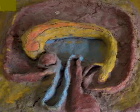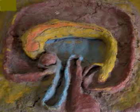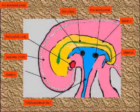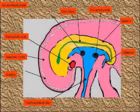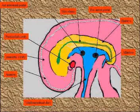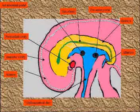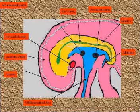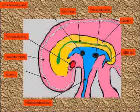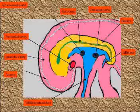During transverse folding, part of the secondary yolk sac is also incorporated into the embryo as the primitive midgut. And as this primitive midgut forms, it becomes attached to the dorsal aspect of the embryo by the dorsal mesentery.